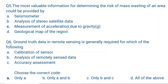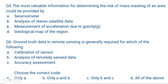Question 6. Ground truth data in remote sensing is generally required for which of the following? A calibration of sensor, B analysis of remotely sensed data, or C accuracy of assessment? The correct answer is A only — calibration of sensor.